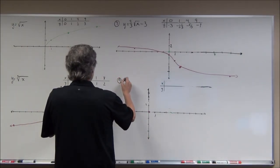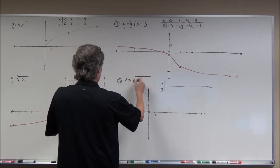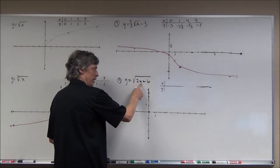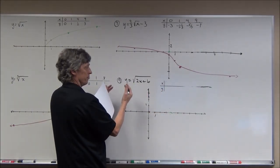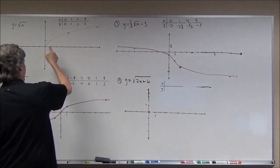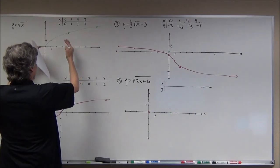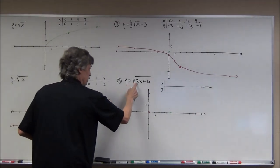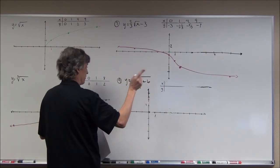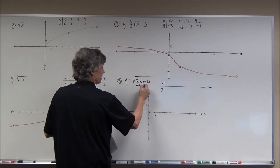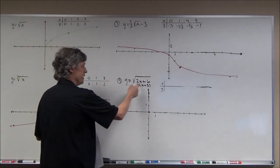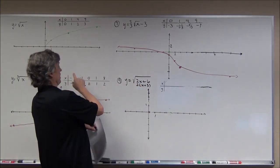Problem 9: y equals the square root of (2x + 6). The 2 times x inside is going to shrink it horizontally. The plus 6 would seem to shift it left 6, but technically this factors as 2 times (x + 3), so it's really been shifted 3 to the left. I need to find x-values that give perfect squares inside.